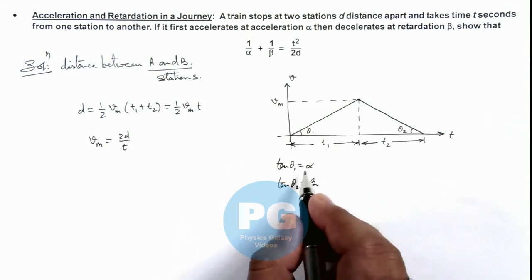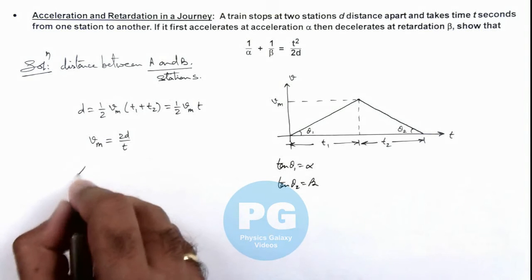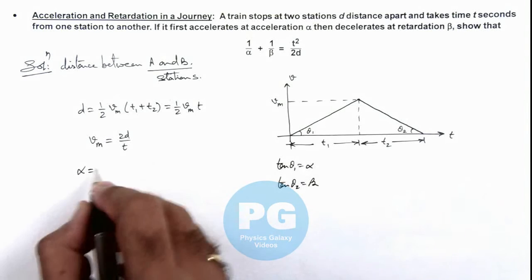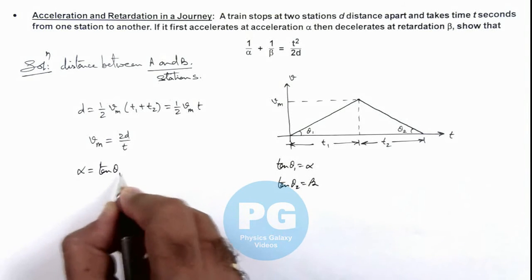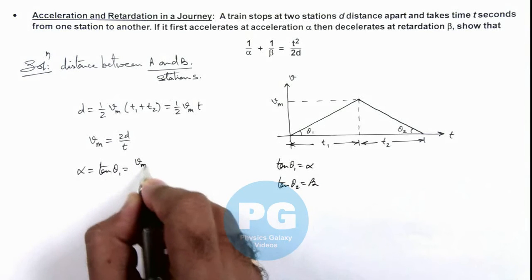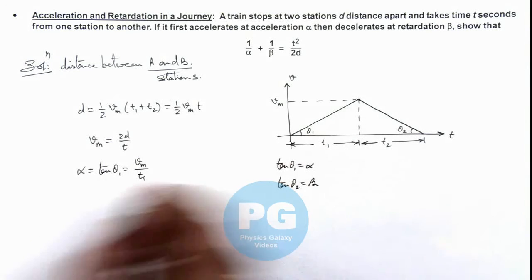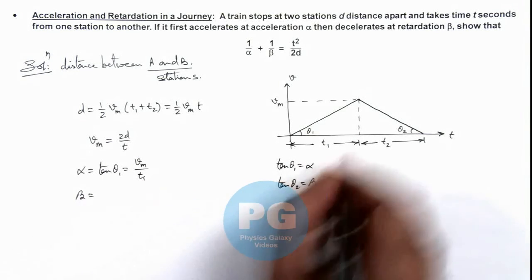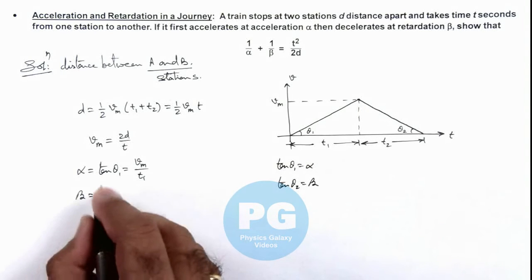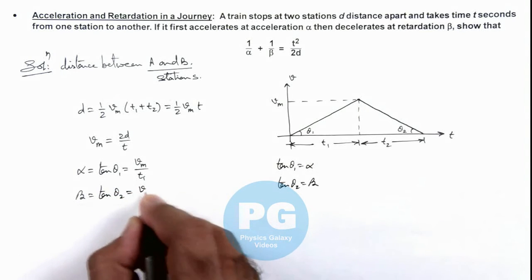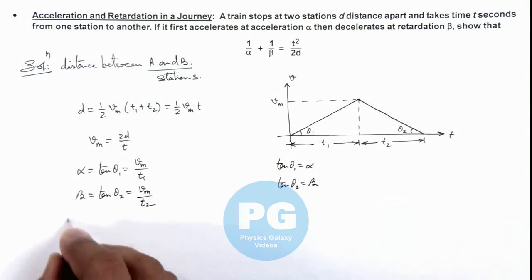Now α is the acceleration, which can be written as tan θ₁, and this can be written as vₘ/t₁ in this triangle. Similarly, β is the retardation, which can be written as tan θ₂, which we can write as vₘ/t₂.